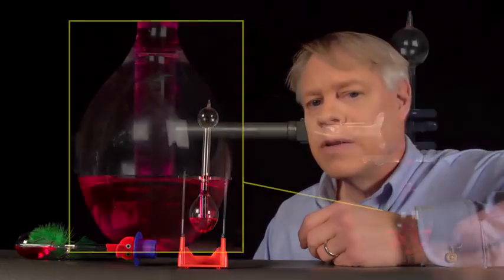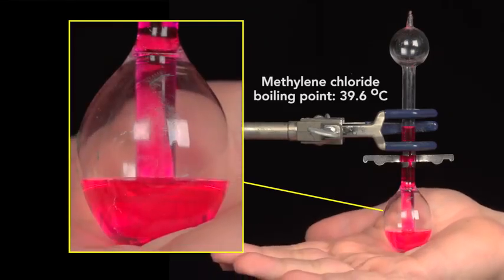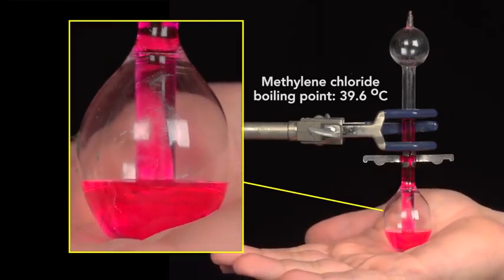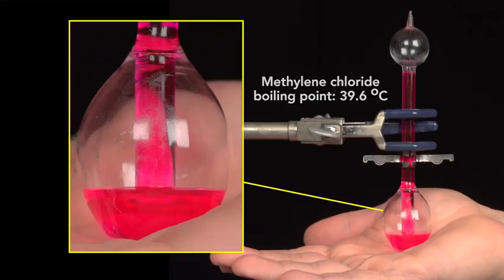Watch what happens as I heat the base of the bird with my hand. You see that liquid level in the base dropping—that's because the energy from my hand is converting some of the liquid into vapor, which increases the pressure in this region. And that causes the liquid to rise to the head.